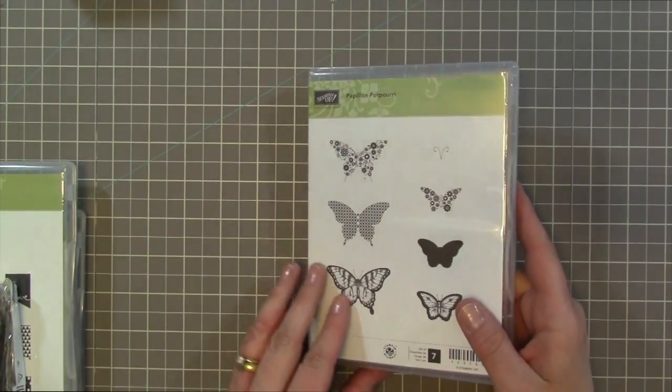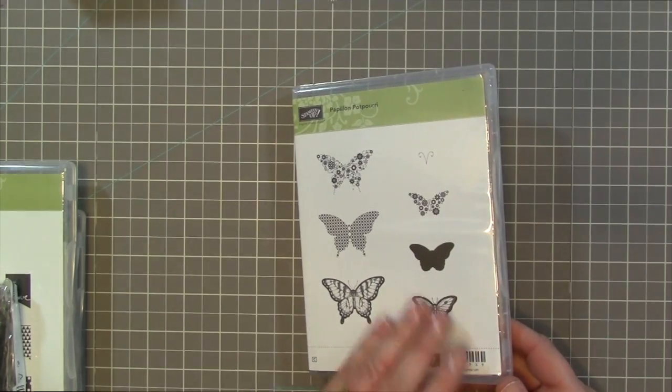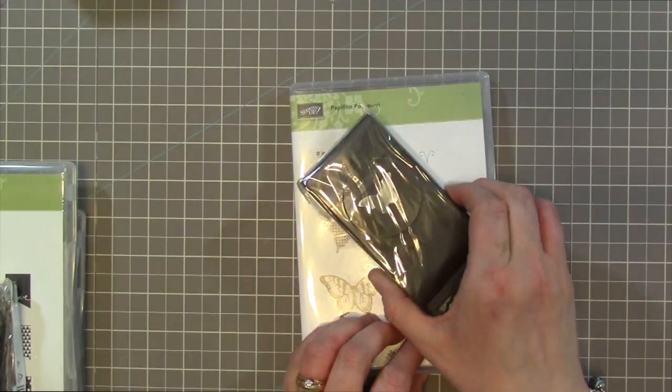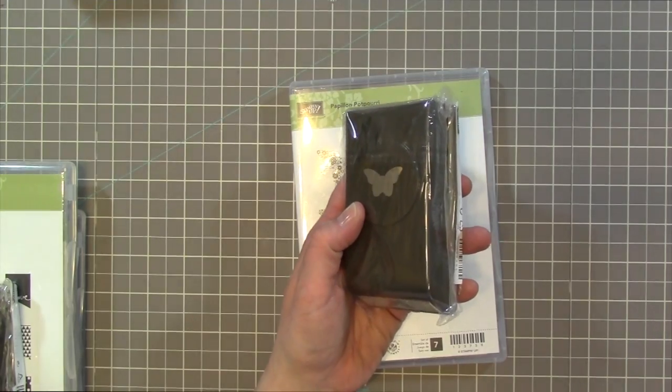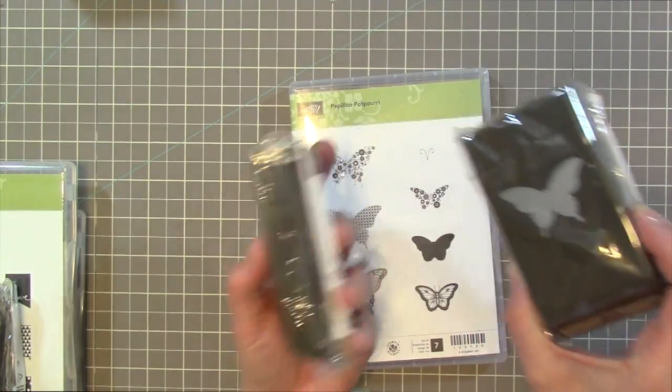And then I also got this I think it's Papillon Potpourri. I hope I'm saying that right. But it's these butterflies right here and they're so cute. So I got the coordinating punches for that. I got the small butterfly and the larger butterfly.